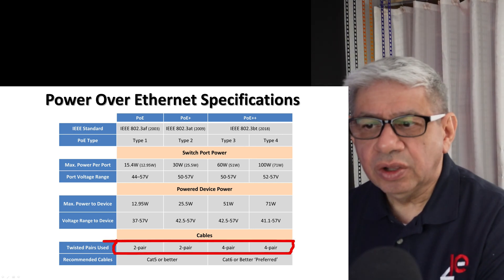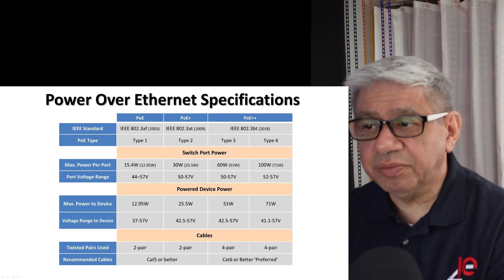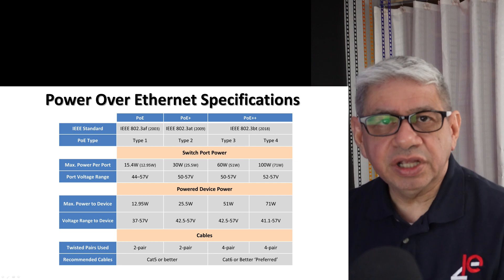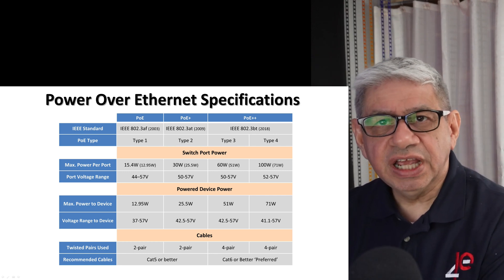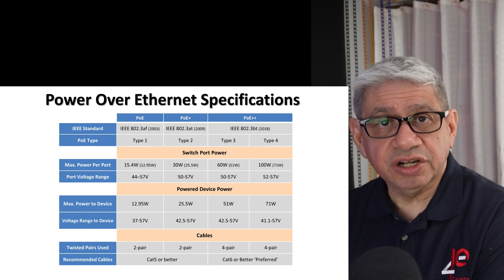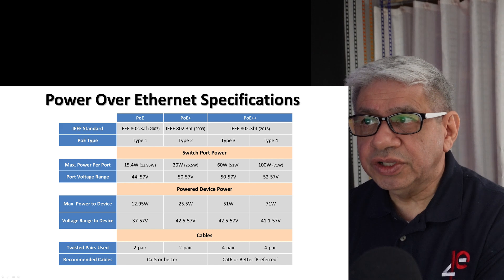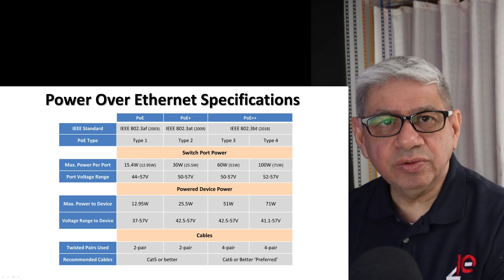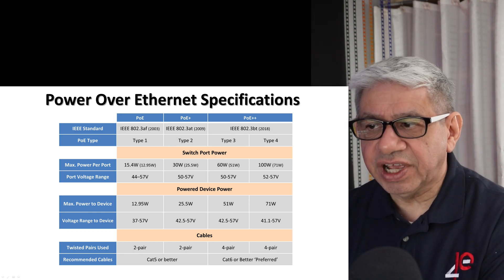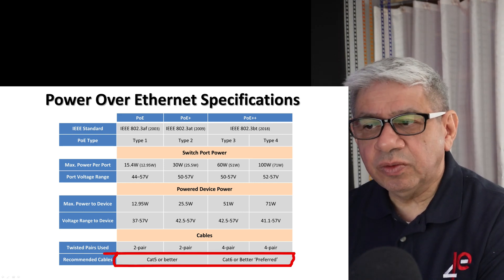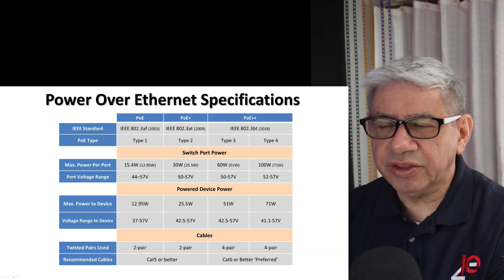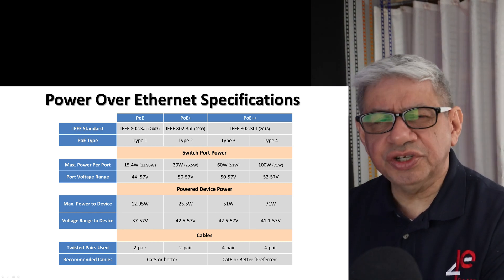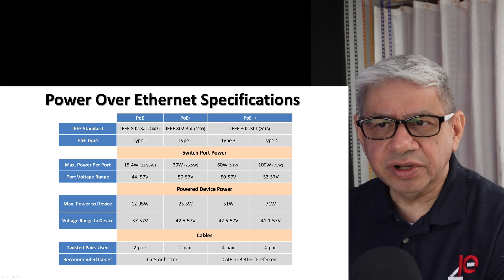The bottom section of the table covers cable usage. For PoE and PoE+, only two pairs of the four twisted pairs in an Ethernet cable are used to deliver power. For PoE++, all four pairs are needed to generate the current required for higher wattage. Cat5 works with all types, though some original PoE would run on Cat3, which I don't recommend due to its other limitations. For PoE++, Cat6 or better is preferred.